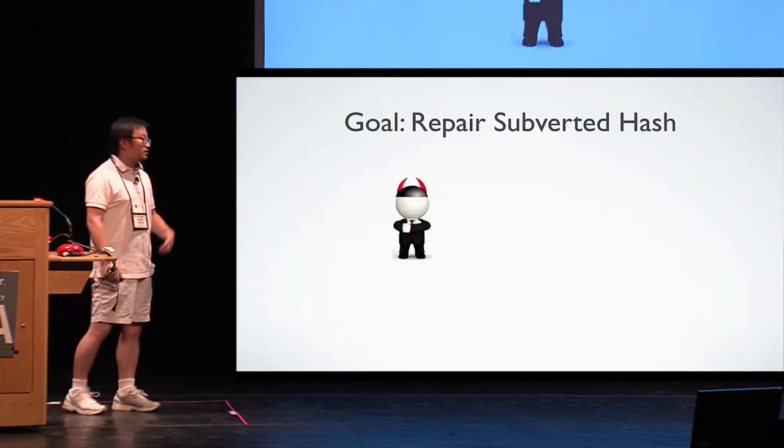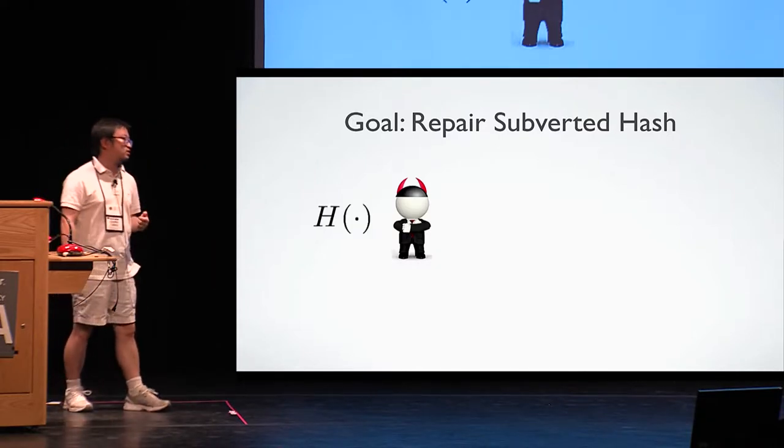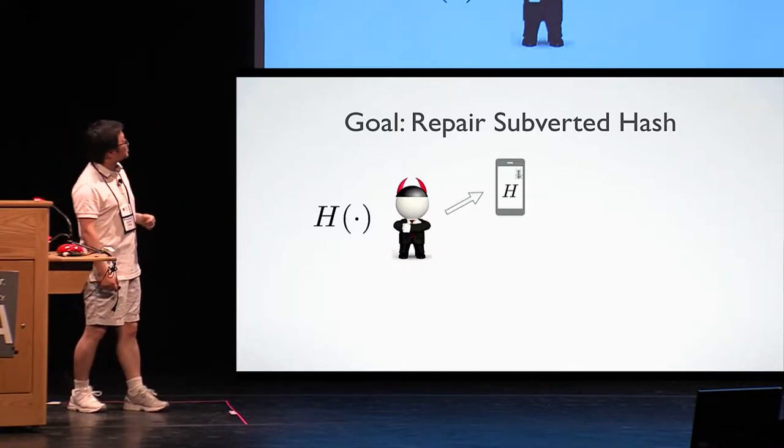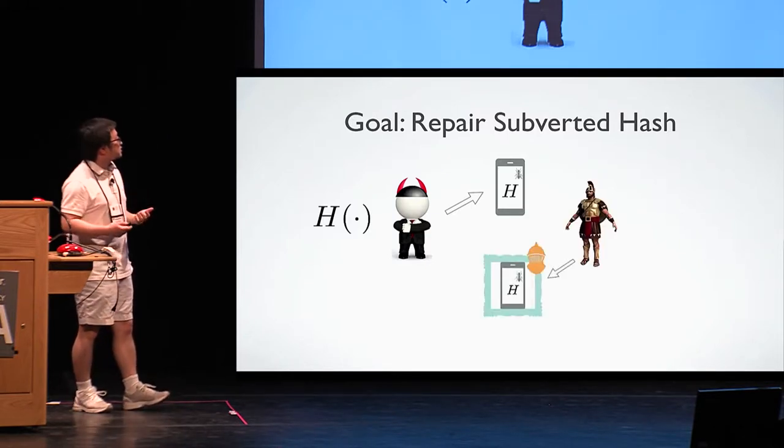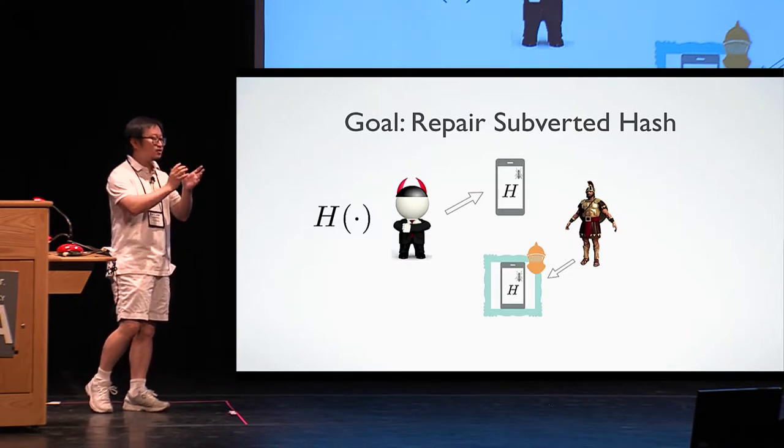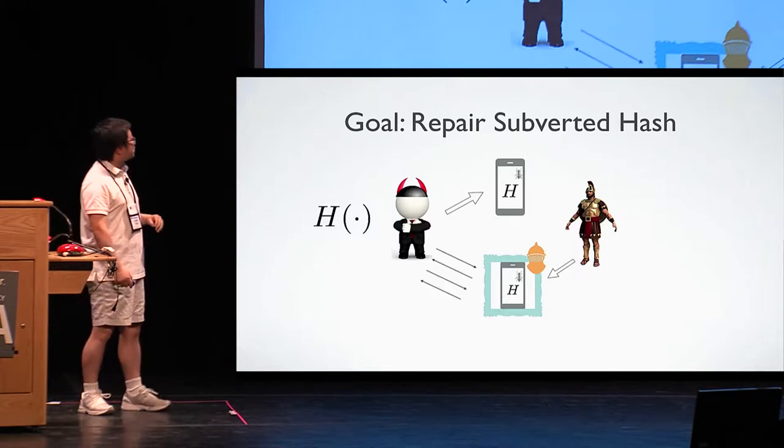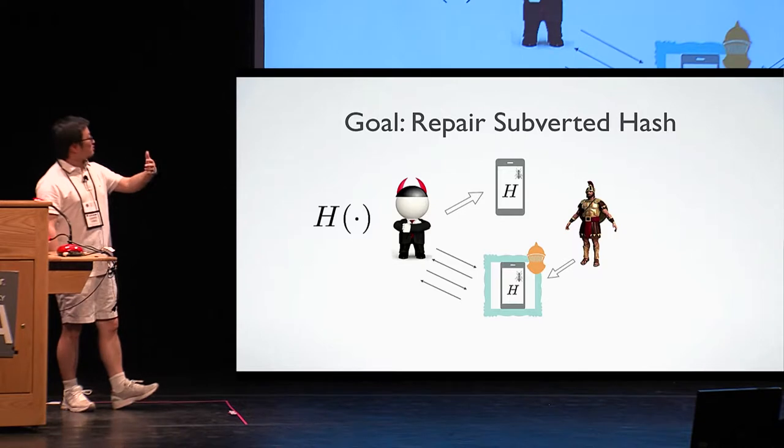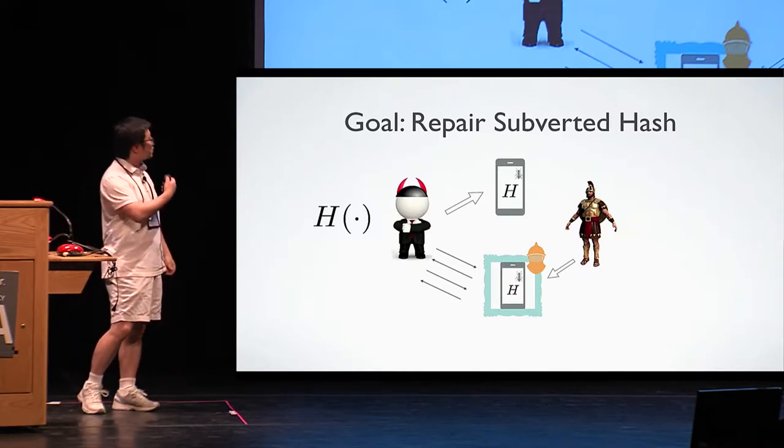So in a high level idea, the procedure goes as follows. The attacker takes a hash specification, say SHA-256, then he produces implementation. Implementation could be subverted. Then the job of us is to provide a simple wrapper and still use the implementation as a core building block, but just wrap it around and we want to make sure that after this simple wrapping, this new corrected hash function would be good even to the attacker.